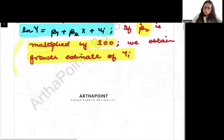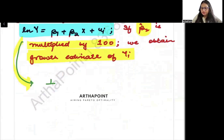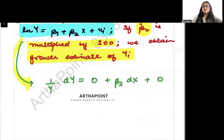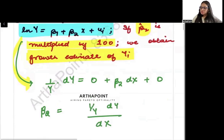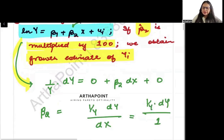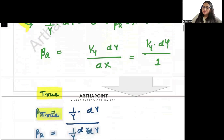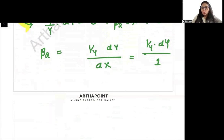We can total differentiate this function: (1/y)dy = 0 + β₂ dx + 0, so β₂ = (1/y)(dy/dx). Now suppose the change in x is one unit — we always interpret β₂ by one unit change — so β₂ = (1/y)dy.